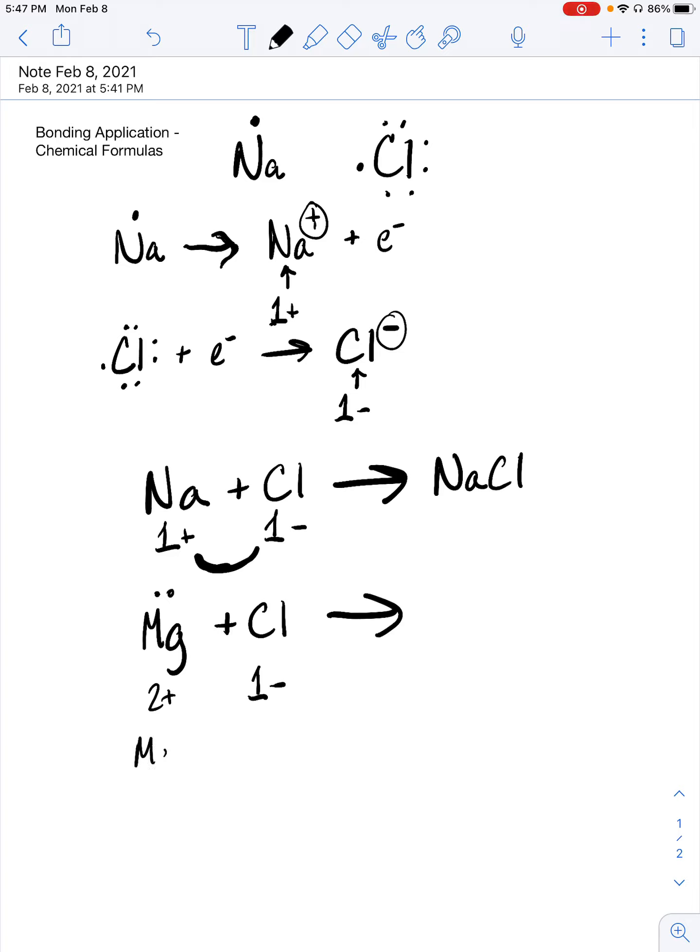So what we can visualize is that magnesium is going to have two electrons to give up. Chlorine can only take one, so we would need a second chlorine to take the other. So what we end up with is MgCl2. So there's a difference in the chemical formulas between magnesium and sodium because they're in different groups of the periodic table and the oxidation states are different. So we have to use the subscripts, and the subscripts represent a count of whatever comes immediately before it.